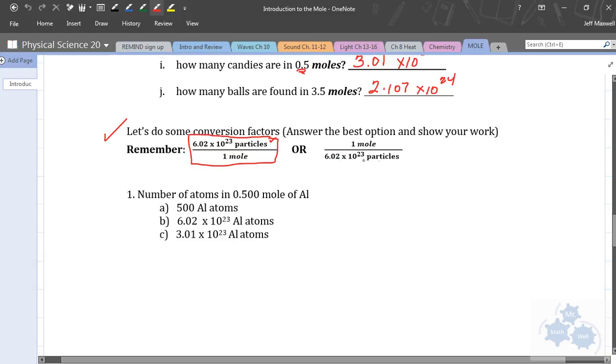There's this many particles in one mole. Also, one mole is to this many particles. Why do you want to keep this in mind? Because when we're converting, one of the ways you can do this is you multiply, always multiply by some conversion factor. And, one of these conversion factors is always going to help you convert between particles and moles.